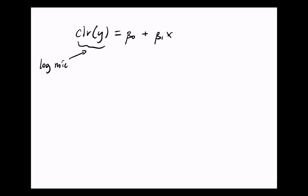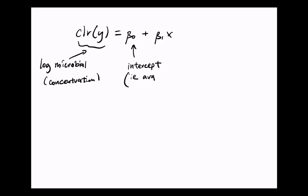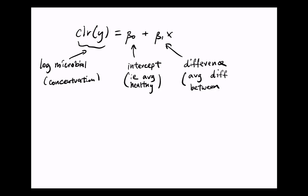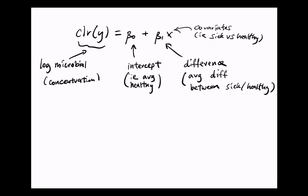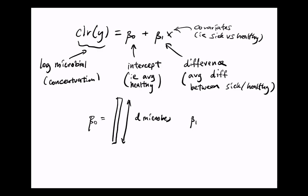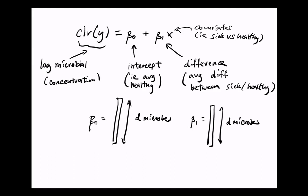Since these log ratios don't have the same constraints that proportions do, we can define our linear regression as we normally would—predicting microbial log abundances in terms of our experimental design. In this regression, beta0 is proportional to the average microbial log abundances in the healthy population, and beta1 is proportional to the average microbial log fold change between the sick and healthy populations. Both beta0 and beta1 are d-dimensional, so you can think of this as a linear regression per microbe.